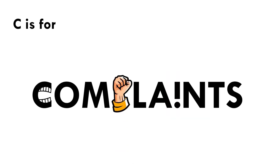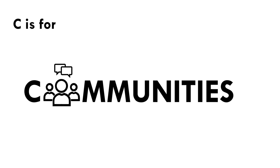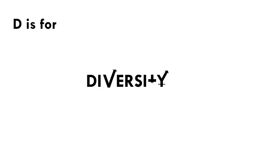C is for complaints. Complaint mechanisms play a vital role in ESG practices, providing an avenue for individuals or groups to voice concerns and seek resolution for issues related to environmental, social, or governance matters. C is for communities. Maintaining good community relations is a vital part of ESG. Construction companies that have good community relations perform better and suffer fewer delays than companies that don't.